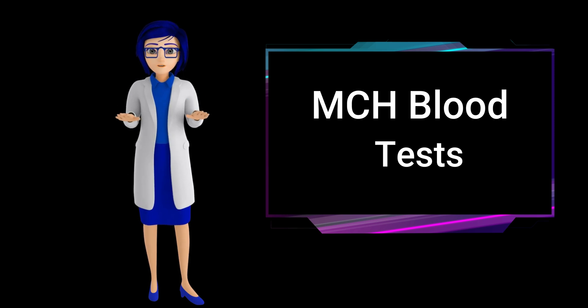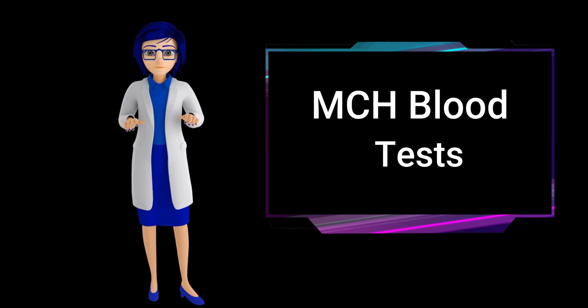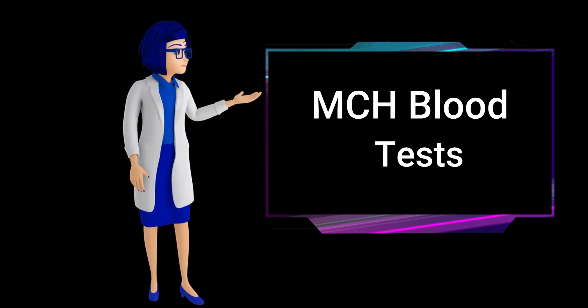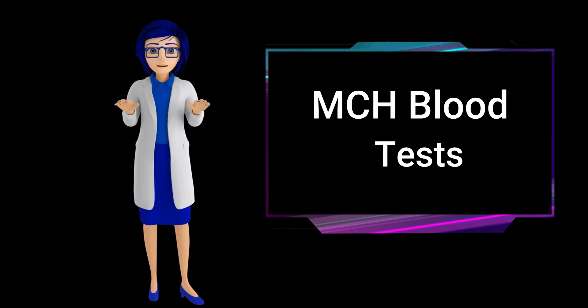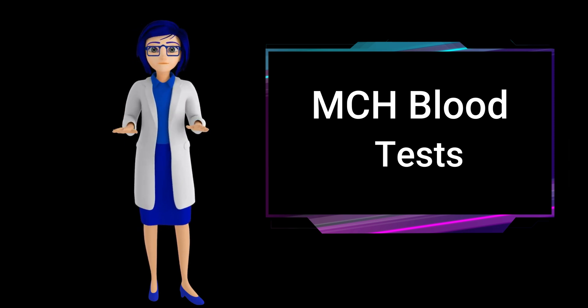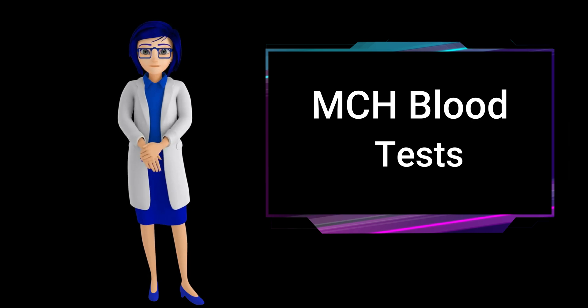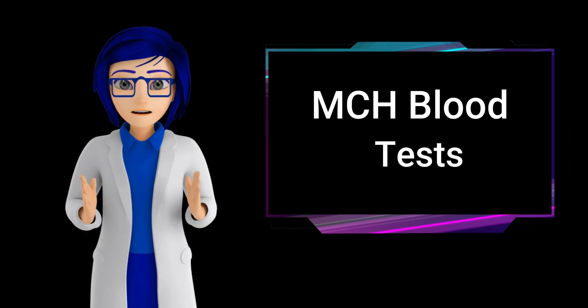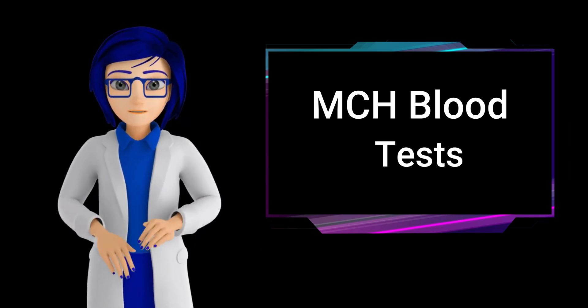A blood test determines the MCH level called a complete blood count (CBC). A CBC is a routine test that measures the number, size, and content of different types of blood cells, including red blood cells, white blood cells, and platelets.